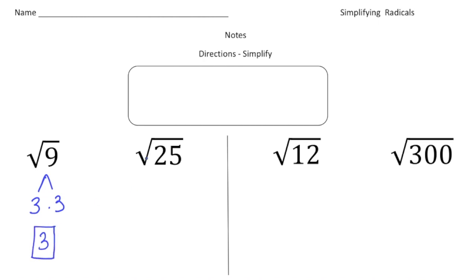The square root of 25 — what number times itself equals 25? Well, it's 5, because 5 times 5 equals 25. So the square root of 25 is 5.